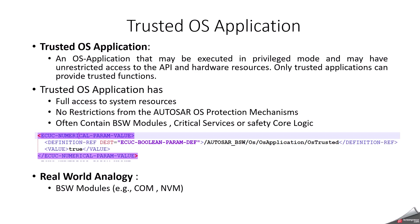According to memory access, trusted OS application can access the entire memory space within the ECU, and it has full access to OS services — for example, scheduler, interrupts, and IOC. According to the protection mechanism, it runs without special runtime checks, and also runs in supervisor mode, that is called privileged mode.